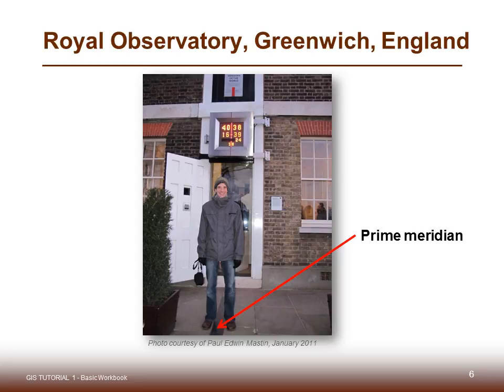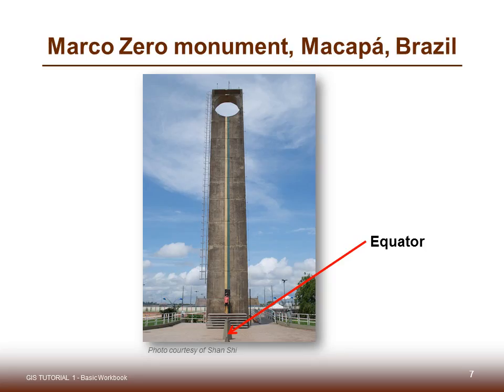Prior to that conference, there had been prime meridians established in China, in the Middle East, in the United States with Washington D.C., and in Paris. But the British prime meridian was the one most frequently in use by the late 1800s, and it became the global standard. Here's another monument that marks the Earth grid system — in this case, it's the equator in Brazil.